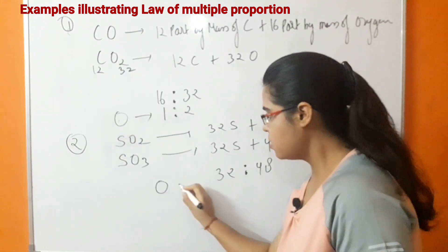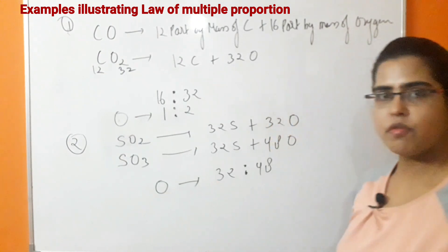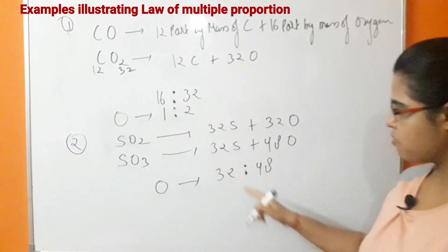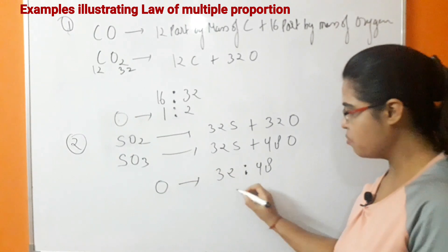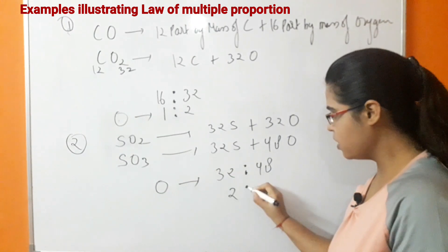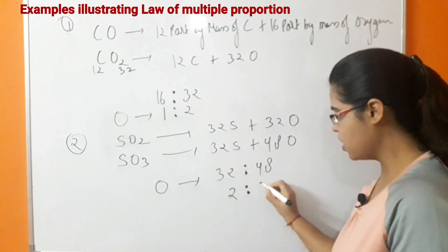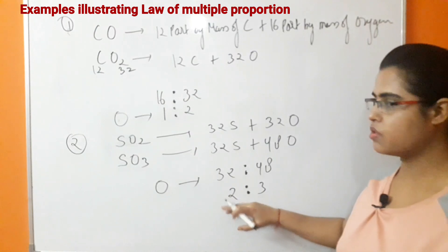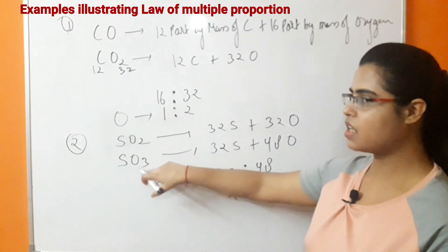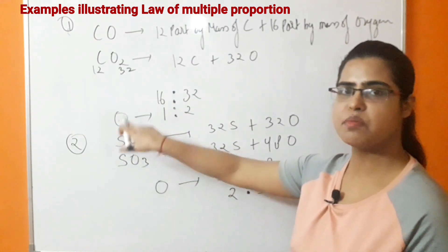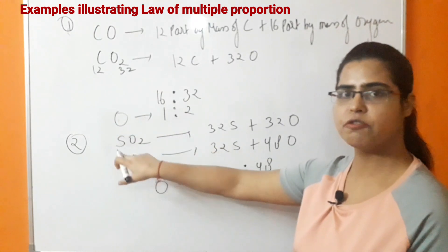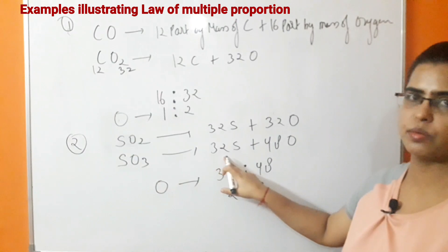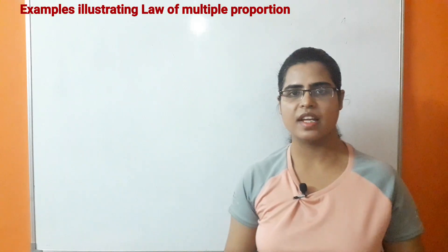On simplification, the ratio 32:48 becomes 2:3. This is the simple ratio of oxygen combining with the fixed mass of sulfur (32) in SO₂ and SO₃.